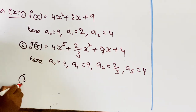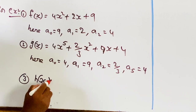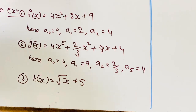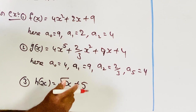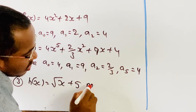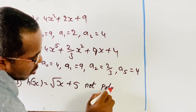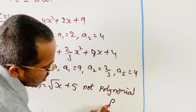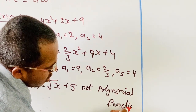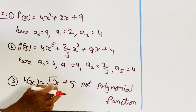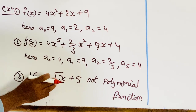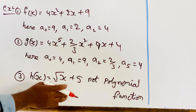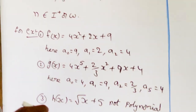The third one is h of x is equal to root x plus 5. Here, this is not a polynomial function, because x has a root — that's why this is not a polynomial function.